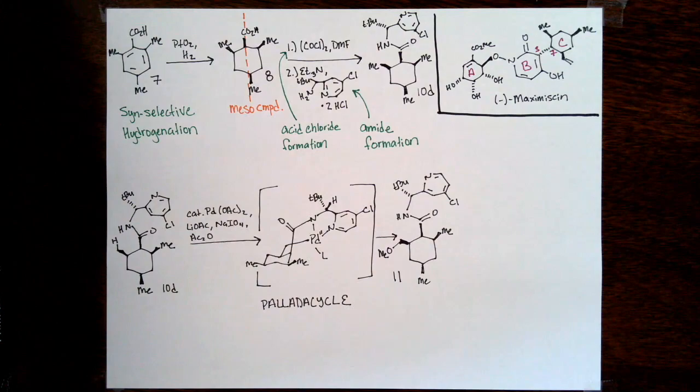To piggyback off what you've all said and really underscore the power of this approach, what they're really doing here is desymmetrizing a meso compound. The cyclohexane starting material 8 is a meso compound. In one diastereoselective reaction after the directing group has been installed, they've essentially set four stereocenters just by doing one selective reaction.